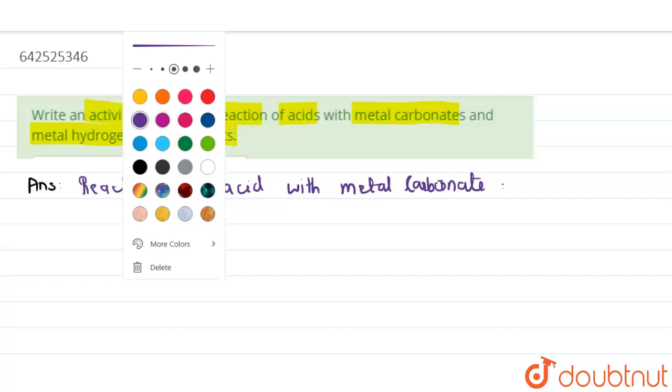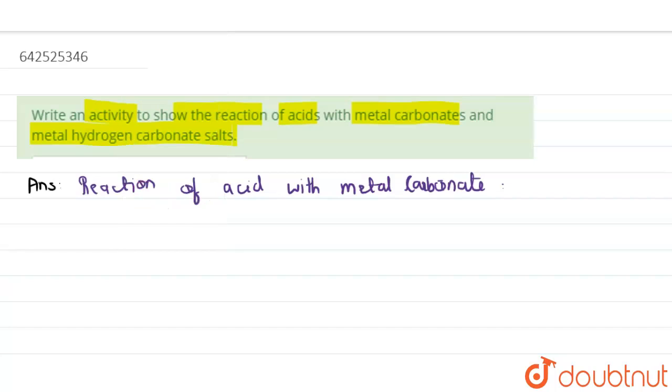So acid plus metal carbonate. This reaction will give salt plus CO2 plus water. CO2 gas is produced in this reaction.